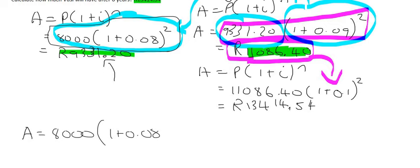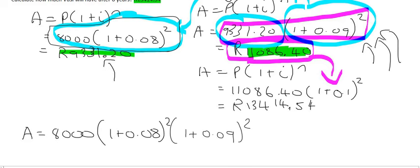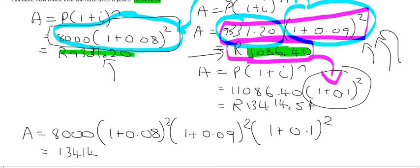So you do the first part like that, but instead of calculating this, you add on this bracket immediately like this. And then instead of calculating that, which would have given us that amount, you just add on this bracket. So you just add all the brackets next to each other and you multiply all of that together like that. And it'll give you the same answer of 13,414 Rand and 54 cents.